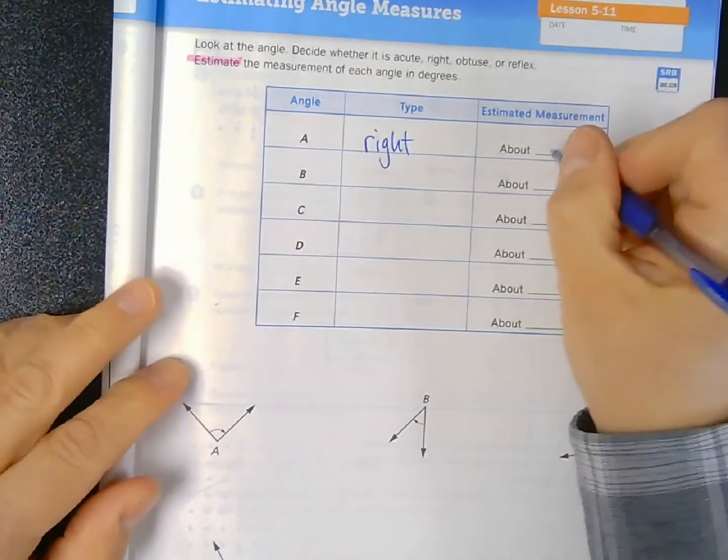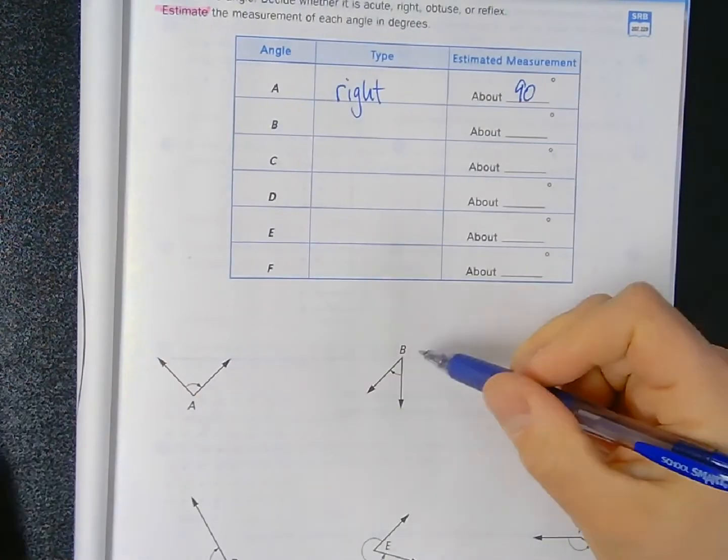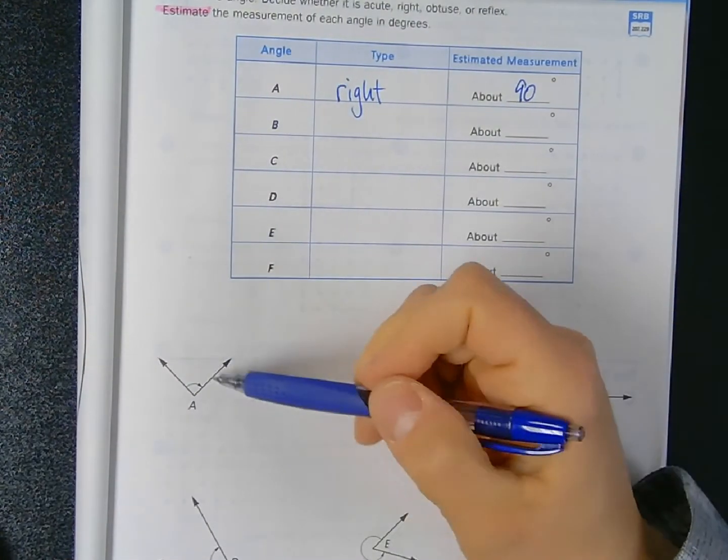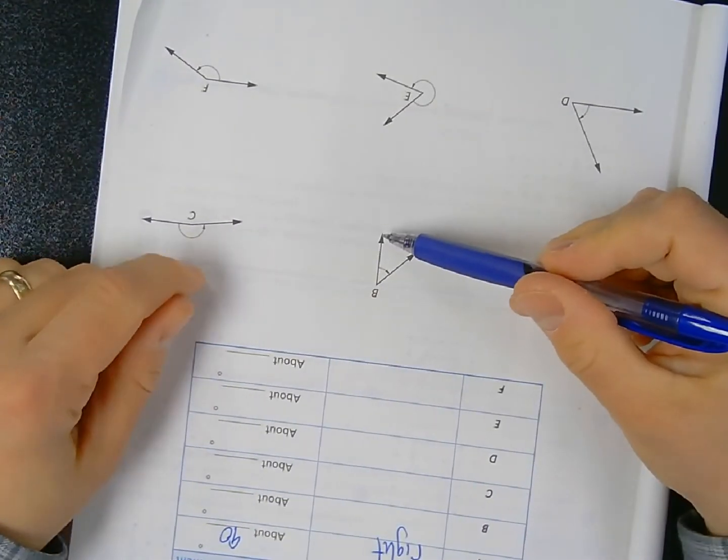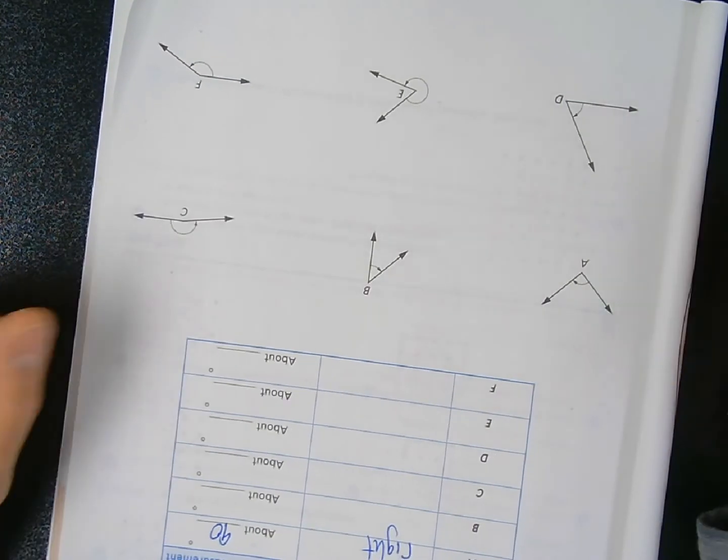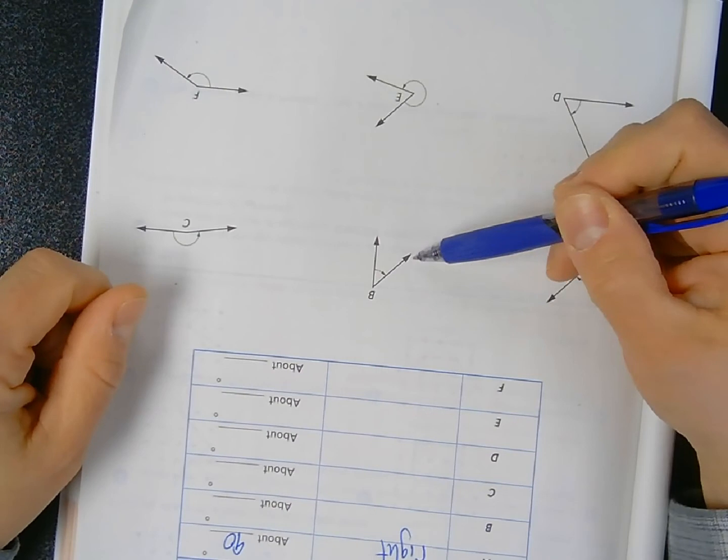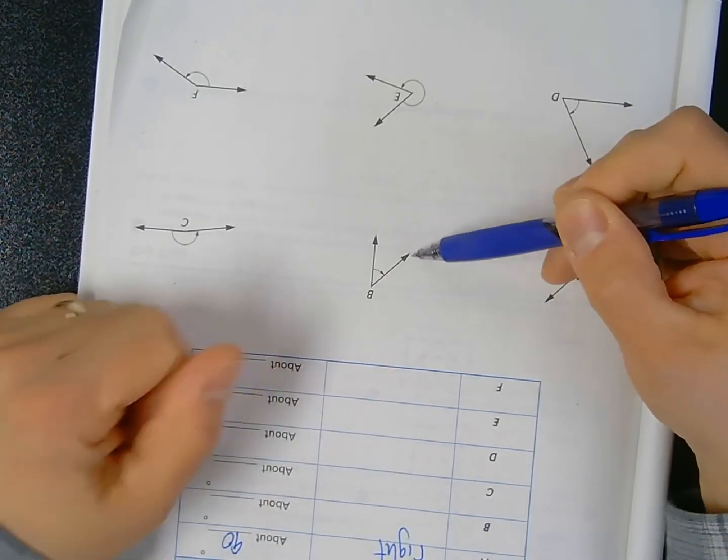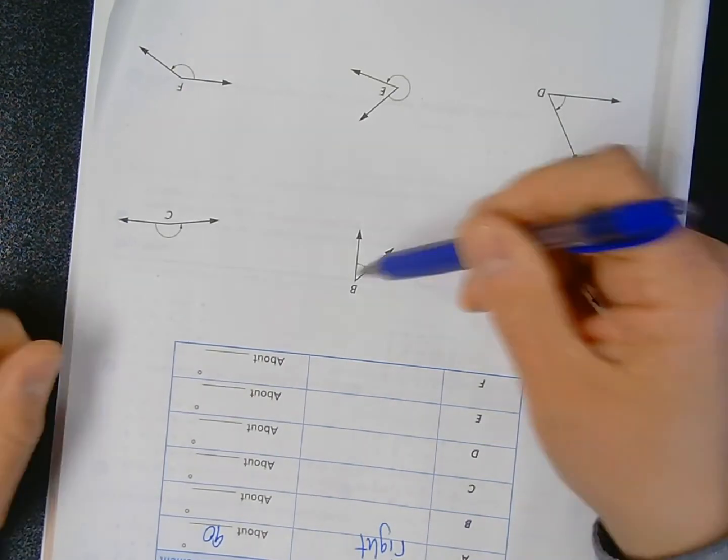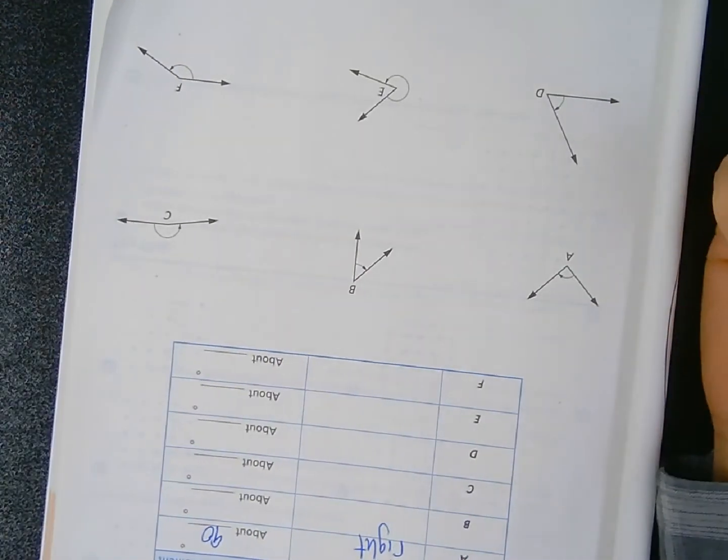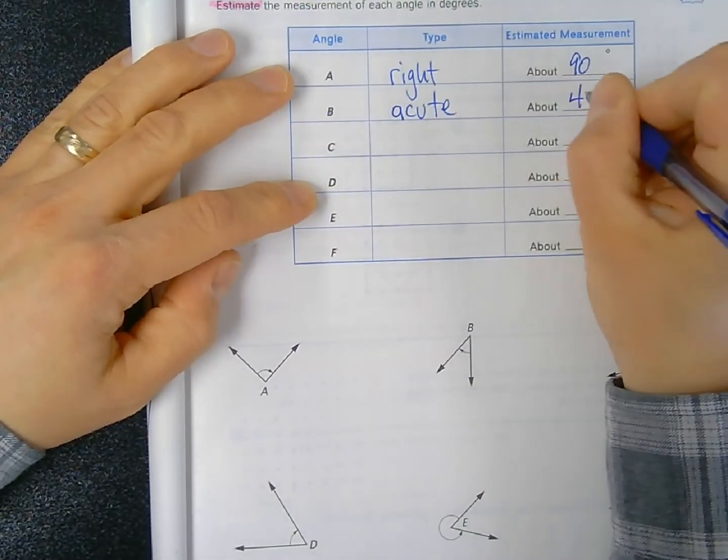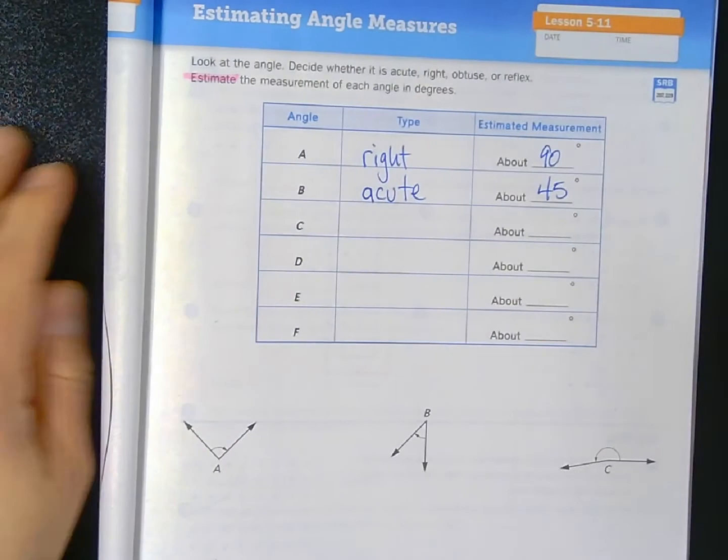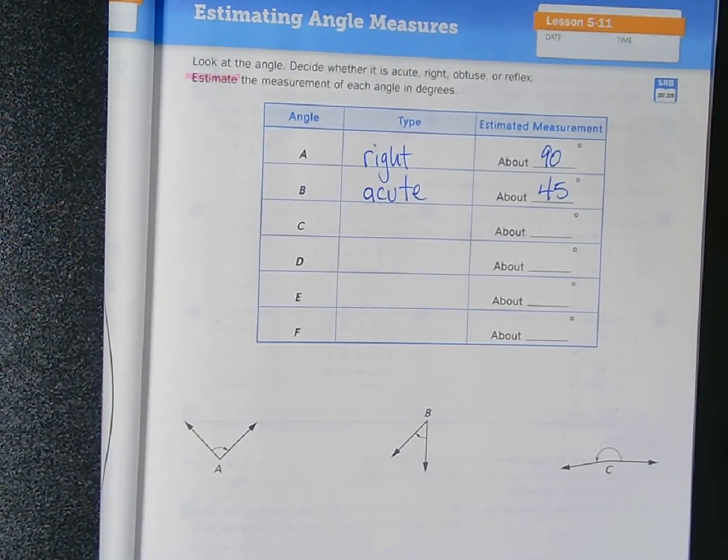Angle B, on the other hand, is a lot smaller than angle A. If I turn my notebook around and orient it so that the first ray is pointing up at that zero-degree mark, my second ray swings down towards the right but doesn't quite get to 90 degrees. It looks to be about half of a 90-degree angle - about 45 degrees, which would make it an acute angle. Since I'm estimating, round numbers that end in zero or five would be the norm.